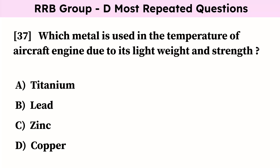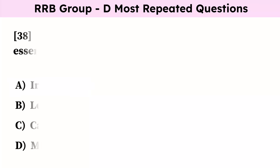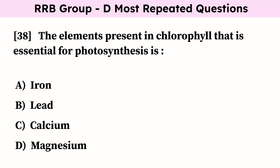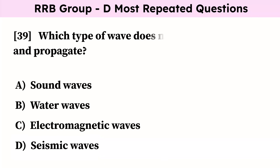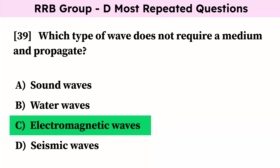Which metal is used in aircraft engines due to its light weight and strength? Correct answer is titanium. The element present in chlorophyll that is essential for photosynthesis is? Correct answer is magnesium. Which type of wave does not require a medium to propagate? Correct answer is electromagnetic waves.